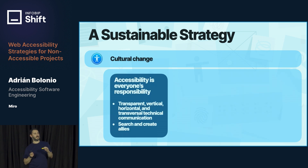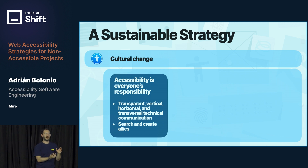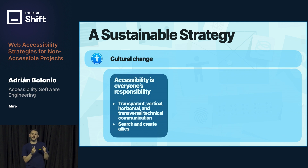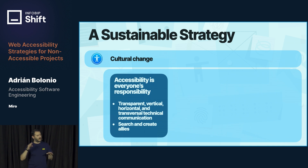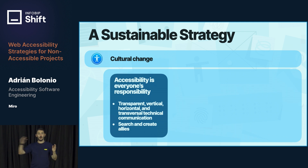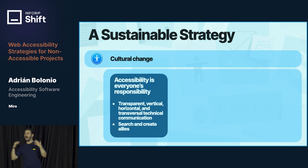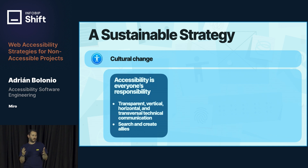The second pillar is cultural change. We always talk about education, but I think we need to include accessibility in our development processes, and this can only be done by changing our culture and our processes. Accessibility is everyone's responsibility. We need transparent communication — vertical: talk to your manager; if you're a manager, talk to your employees. But also horizontal: with your colleagues. And transversal: talk to other teams — the design team, the infrastructure team. It affects everyone.